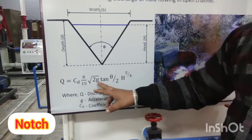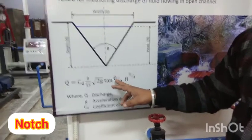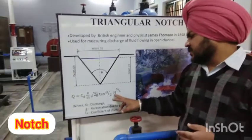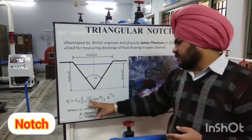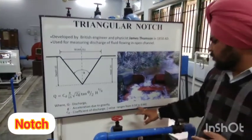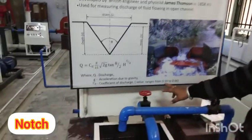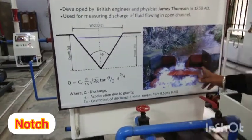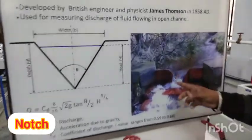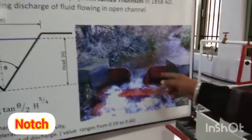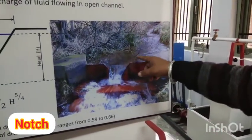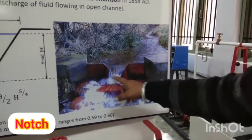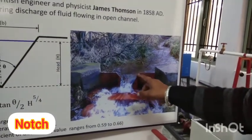Here, g is the acceleration due to gravity, theta is the angle of the notch which is equal to 90 degrees, and H is the net rise in the water level. The coefficient of discharge CD has values ranging from 0.592 to 0.66. This is the practical application of the V-notch, which is used in an open channel under atmospheric pressure.